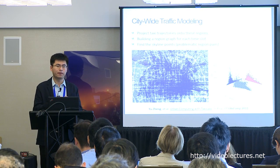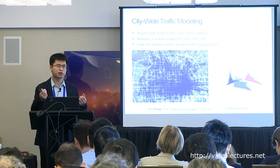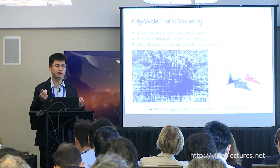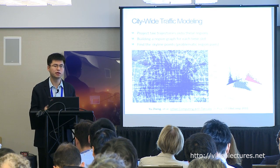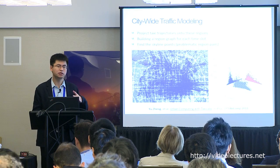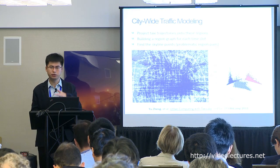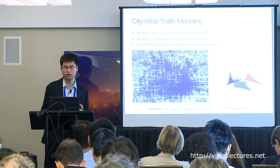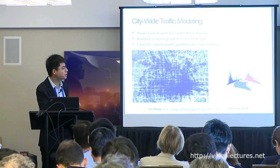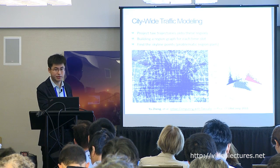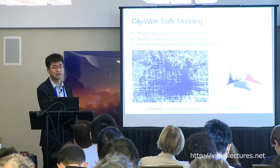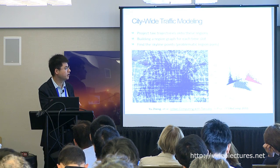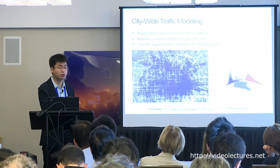The third feature is the detour ratio — the ratio between the actual travel distance of vehicles and the Euclidean distance between the two regions. The bigger the ratio, the longer the detour people must make. We then formulate a three-dimensional space based on these three features: traffic volume, travel speed, and detour ratio.